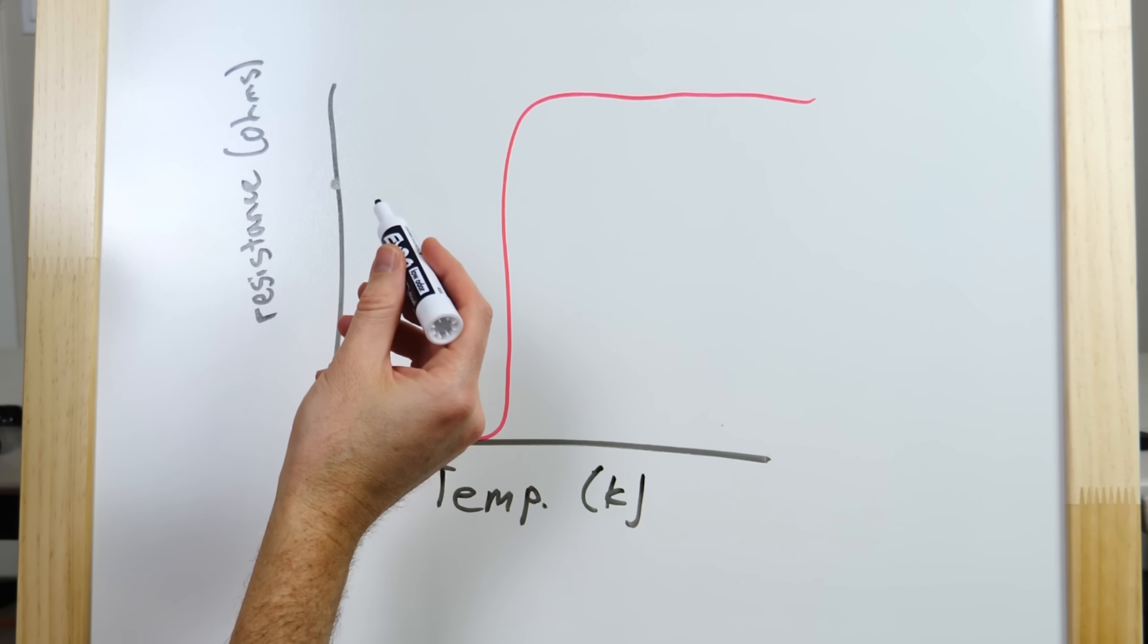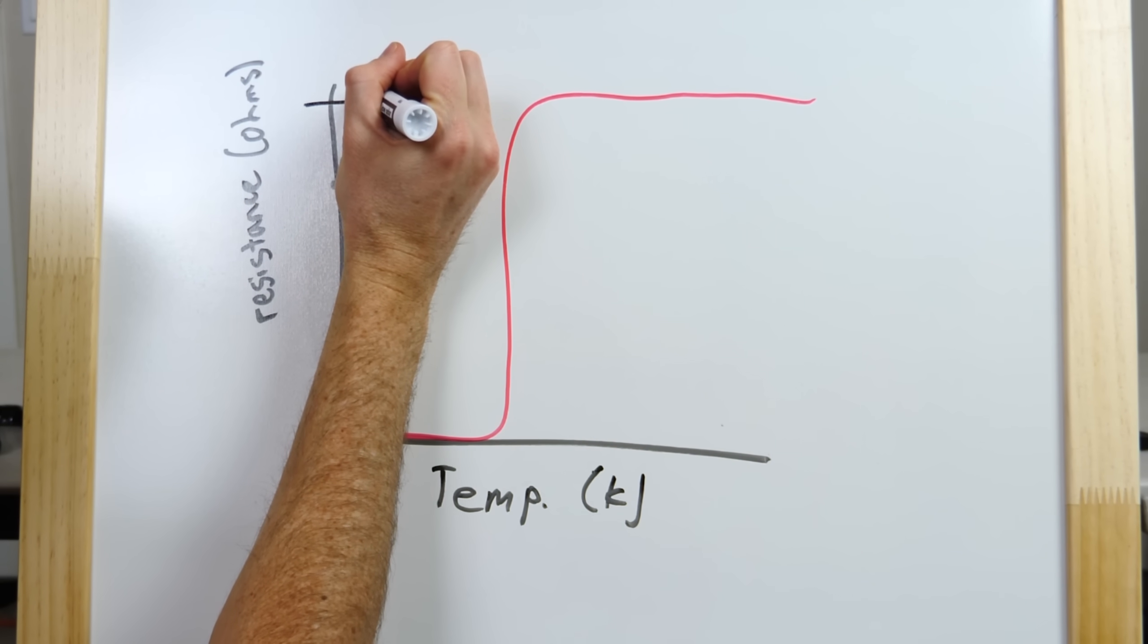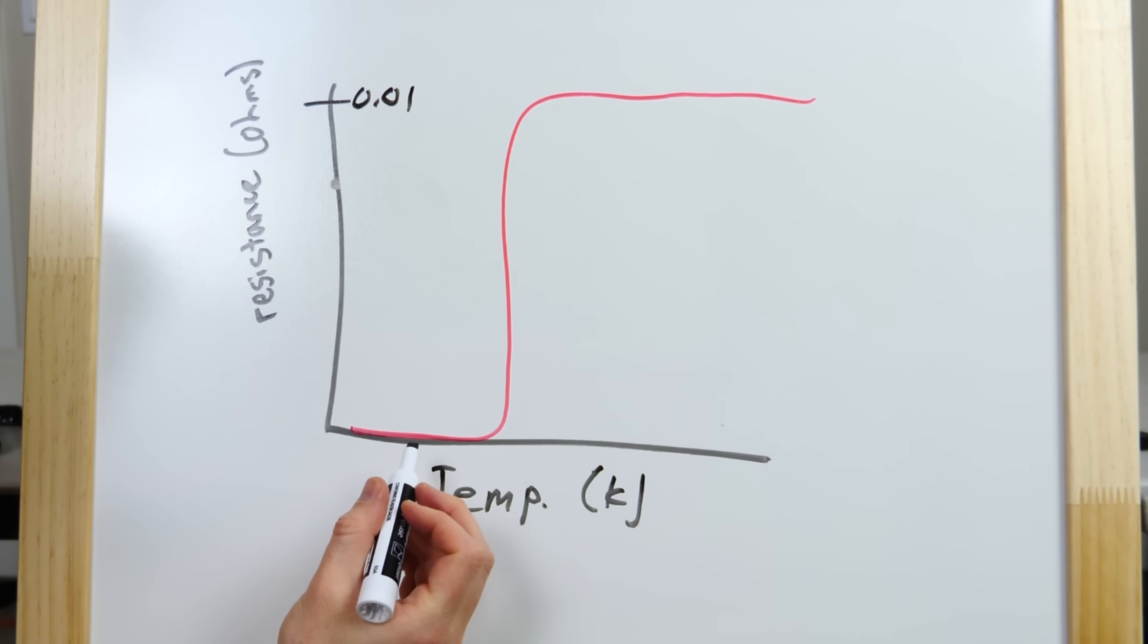Now, for the superconductor that I was using, this is around 0.01 ohms. And the interesting thing is, this is exactly zero ohms. So, once it drops down to this lower temperature, the resistance of the material is exactly zero. Not really small, but zero. There's no electrical resistance.